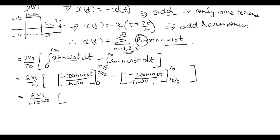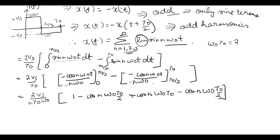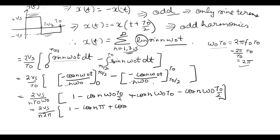Now placing all the values, we get: 1 minus cos(nω₀ T0 by 2), plus cos(nω₀ T0) minus cos(nω₀ T0 by 2). Now ω₀ T0 equals 2π f0 into T0, which equals 2π upon T0 into T0, which equals 2π. So wherever ω₀T0 is written we substitute 2π, giving 2Vs upon n·2π times: 1 minus cos(nπ) plus cos(2nπ) minus cos(nπ).